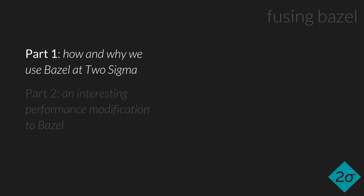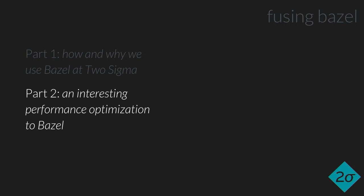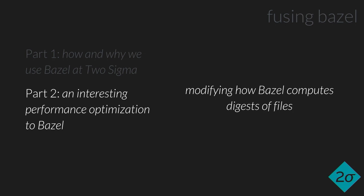So the contents of the talk: during the first part, we'll discuss how and why we're using Bazel. This will be a testimonial from us. The short of it is that it's faster than what we have right now, and we're optimizing for incremental builds. The second part will be about one performance optimization — a small change to Bazel that improved our incremental builds — modifying how Bazel computes its file digest.